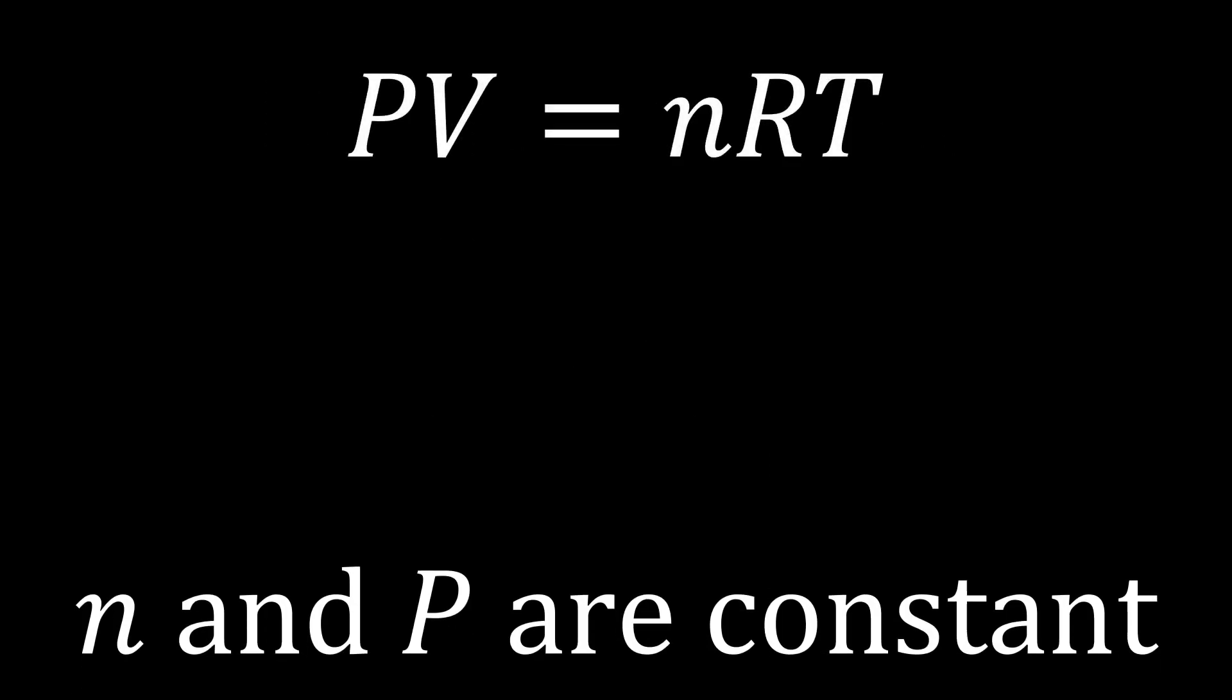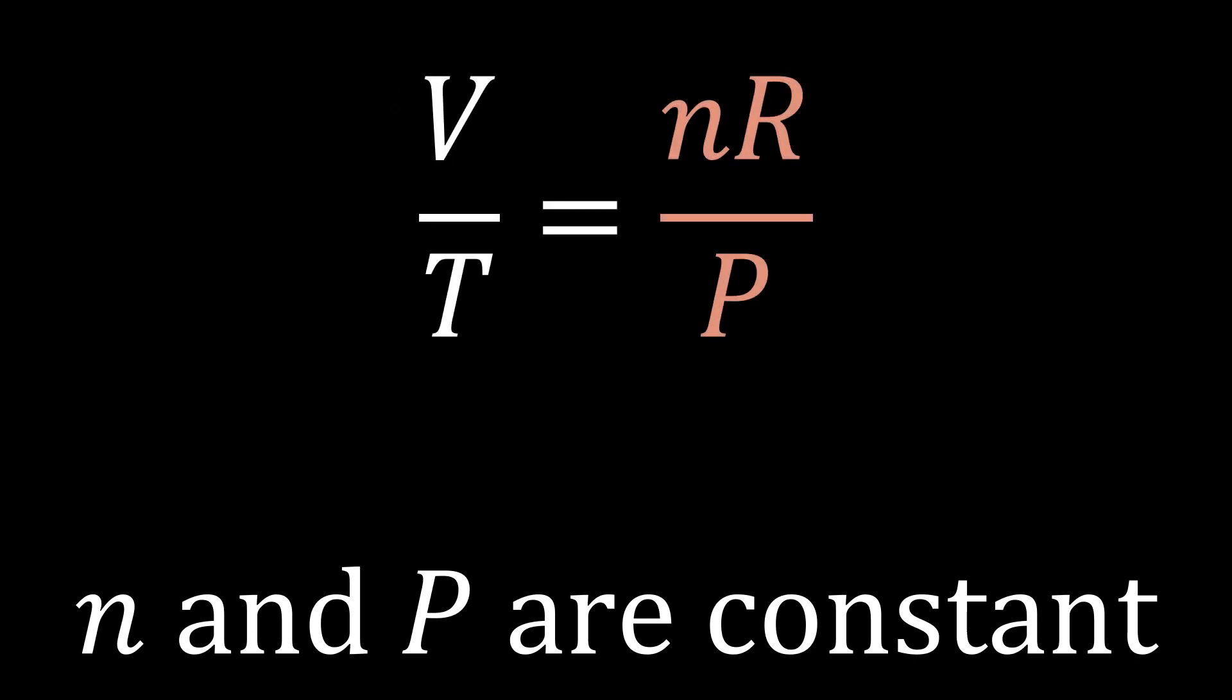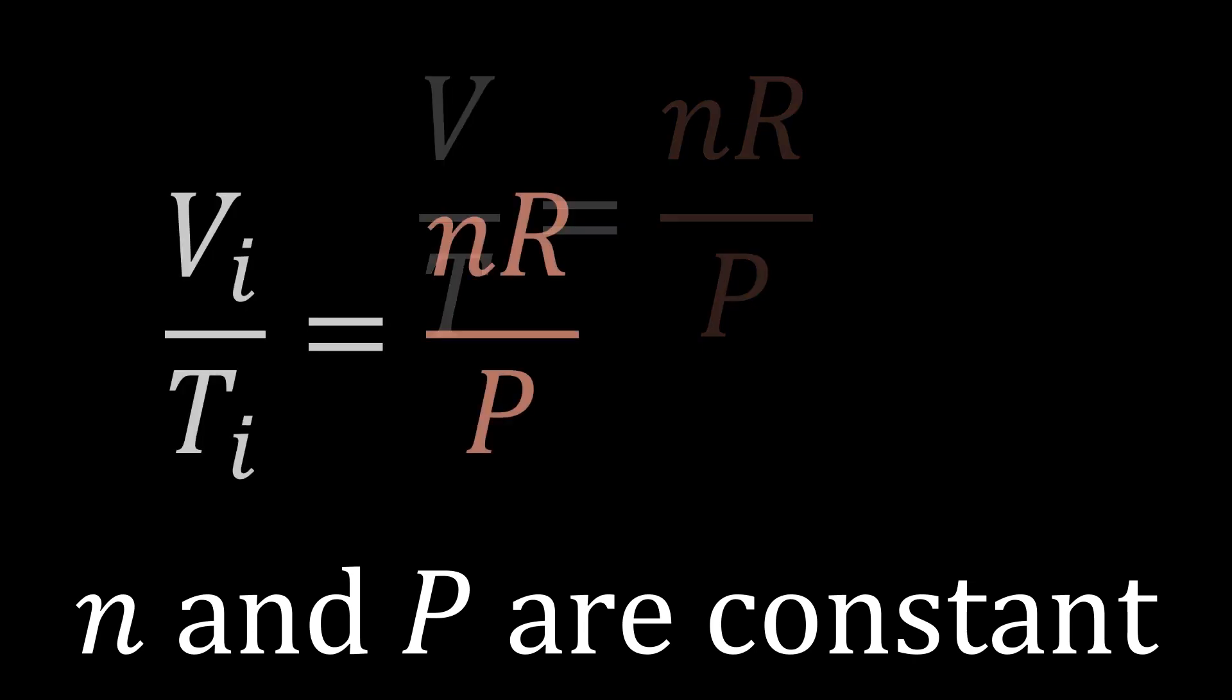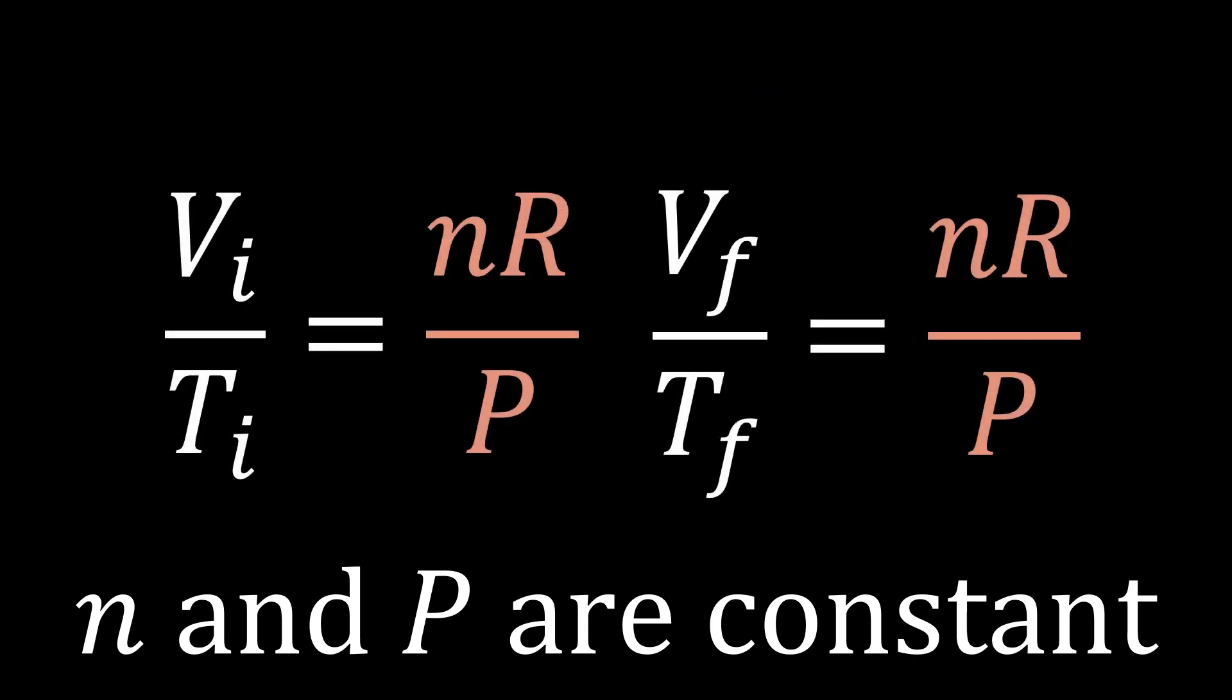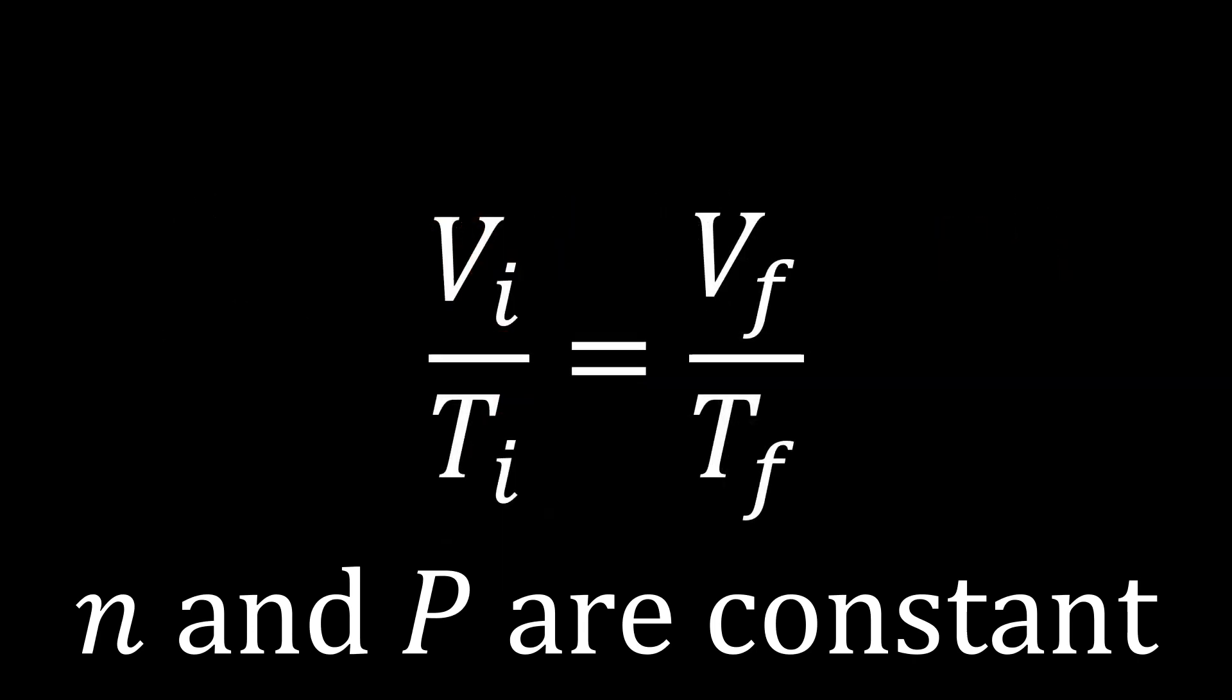Again, we'll start with the ideal gas law, but we'll put it in a form where everything that is held constant is on the right side, and the two variables that can vary are on the left side. Again, we will write this for an initial state and a final state, and we'll notice that we can set these equal to each other because the right sides are equal to each other. And that results in Charles' law.